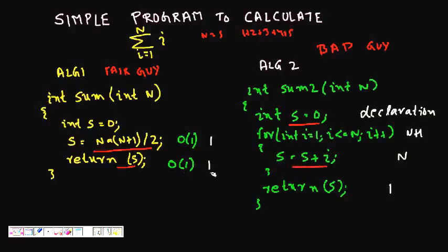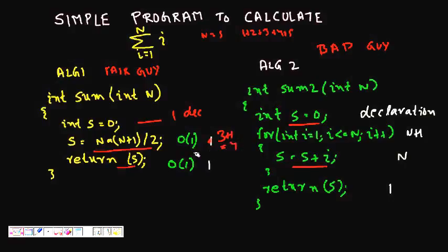Analyzing the fair guy's code: the declaration is executed once at no cost. The line s = n*(n+1)/2 involves one addition, one multiplication, and one division — roughly four operations — plus one for return s. This is a constant number of steps regardless of input, so this algorithm runs in O(1), constant time.